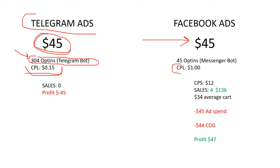Over here on Facebook, with the same type of setup, the same type of offer, the same type of everything — if I take that same $45 and spend it on Facebook, it's going to cost me about $12 per sale, so I would have generated about four sales. My average cart value is $34, so that would have been about $136 in revenue. After subtracting the ad cost and cost of goods, I would have been left with about $47 in profit. At the end of the day, Facebook ads still outperformed, even though the lead volume was significantly higher on Telegram. The quality, not so much.